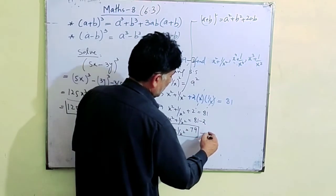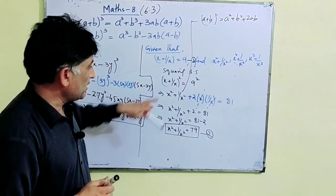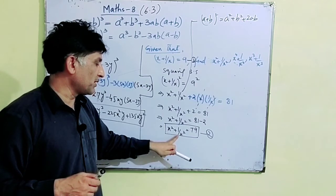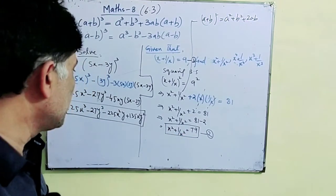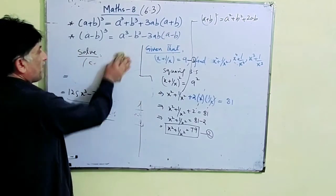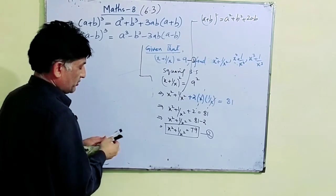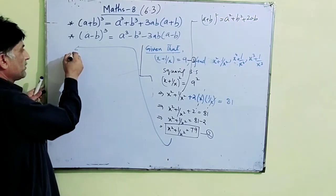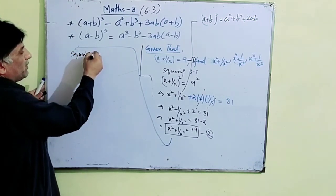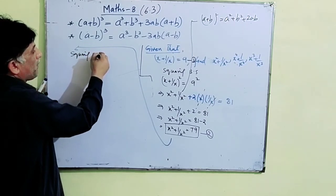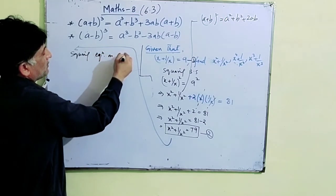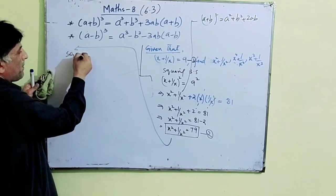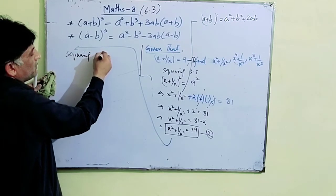So we found x² + 1/x² = 79 — call this equation 2. We derived this by squaring equation 1. Now to find x⁴ + 1/x⁴, we square equation 2 again on both sides.